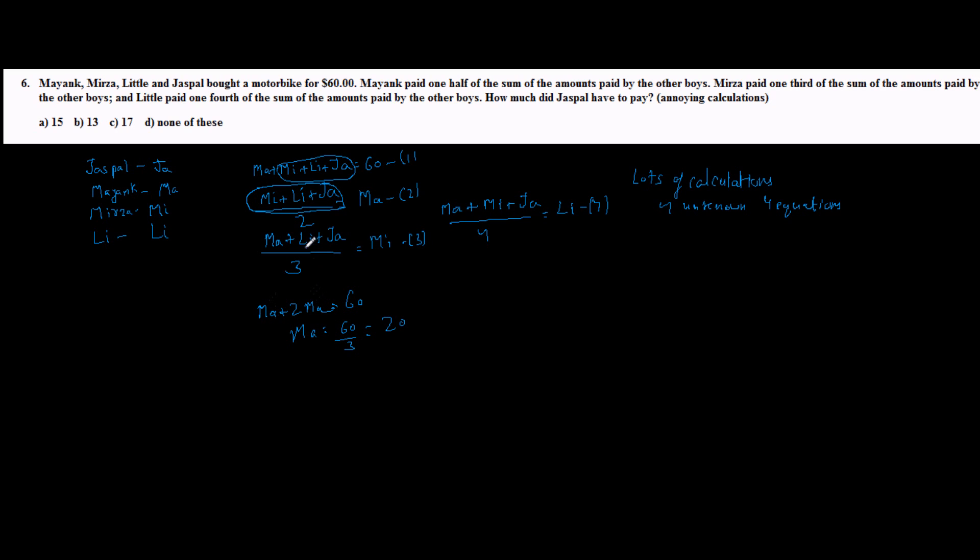Similarly, in this it will become MI plus 3MI. If I replace MA plus LI plus JA in equation 1, I get MI plus 3MI equal to 60. Therefore MI equal to 60 by 4, equal to 15. Similarly I can calculate LI. So LI in this case will be equal to 4LI, so LI plus 4LI equal to 60. And LI hence is equal to 12. So we were able to calculate MA, MI, and LI pretty easily.